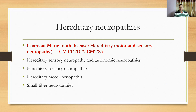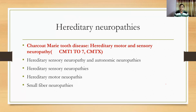There are other hereditary neuropathies as well, such as HSN — hereditary sensory and autonomic neuropathy, hereditary sensory neuropathy, hereditary motor neuropathy, and small fiber neuropathy. The most common hereditary neuropathy is hereditary motor sensory neuropathy, also called Charcot-Marie-Tooth disease.